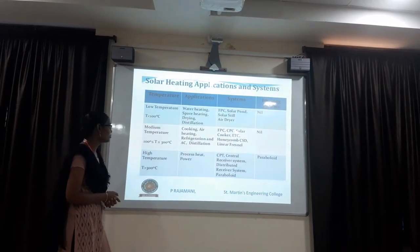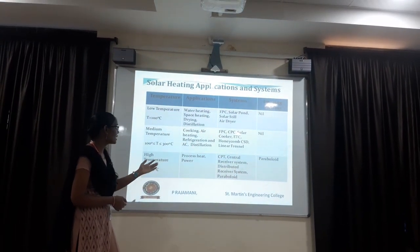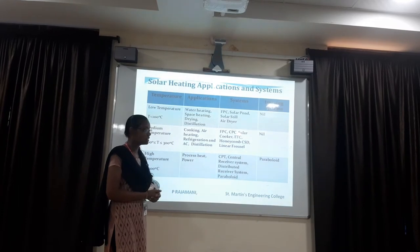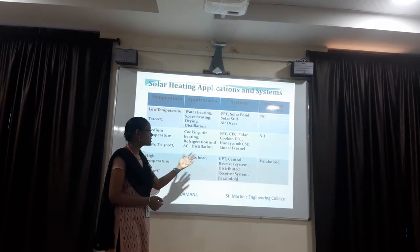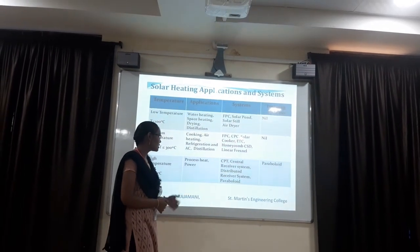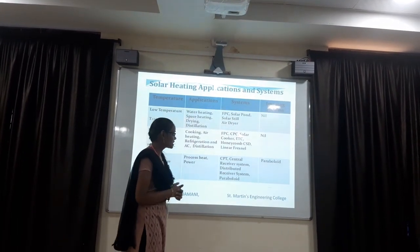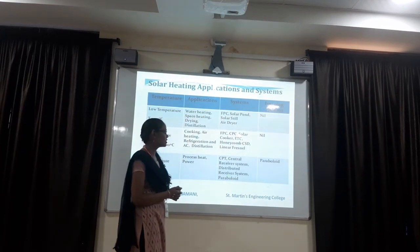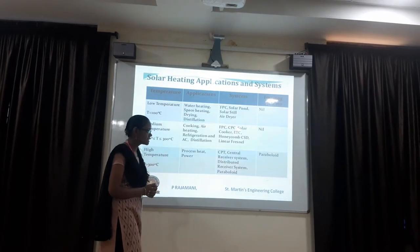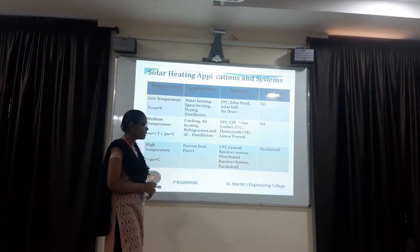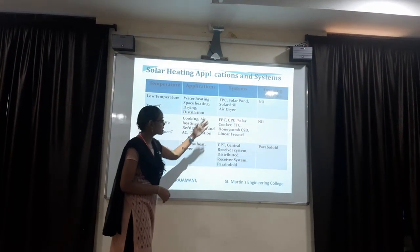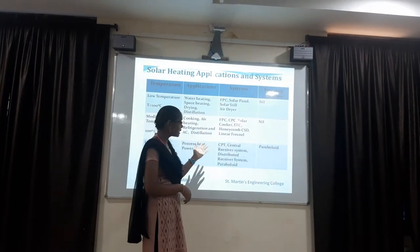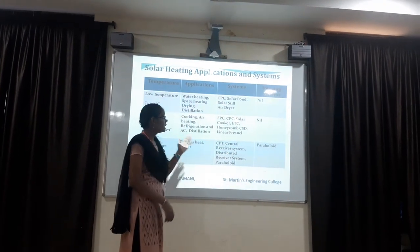For higher temperature applications: process heating and power generation. The systems used include process heat systems, CPT, central receiver systems, distributed receiver systems, and parabolic dish. These are the systems of the thermal conversion system.